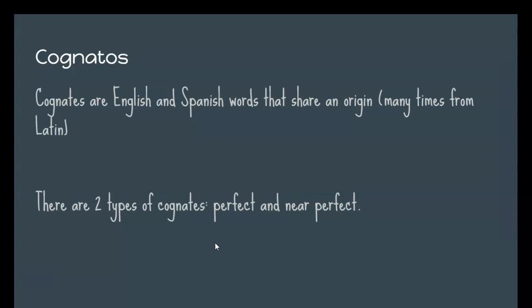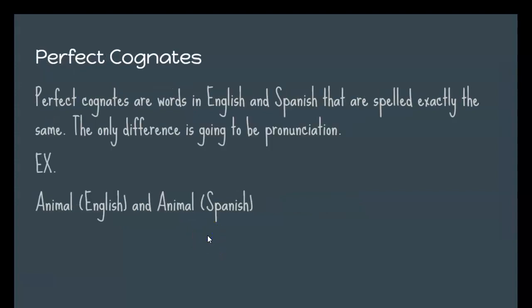A lot of times they come from Latin and they sound and mean the same thing. So there are two types of cognates we're going to talk about real quick: perfect and near perfect. Perfect cognates are words in English and Spanish that are spelled exactly the same. The only difference is going to be the pronunciation. So animal in English is animal in Spanish.